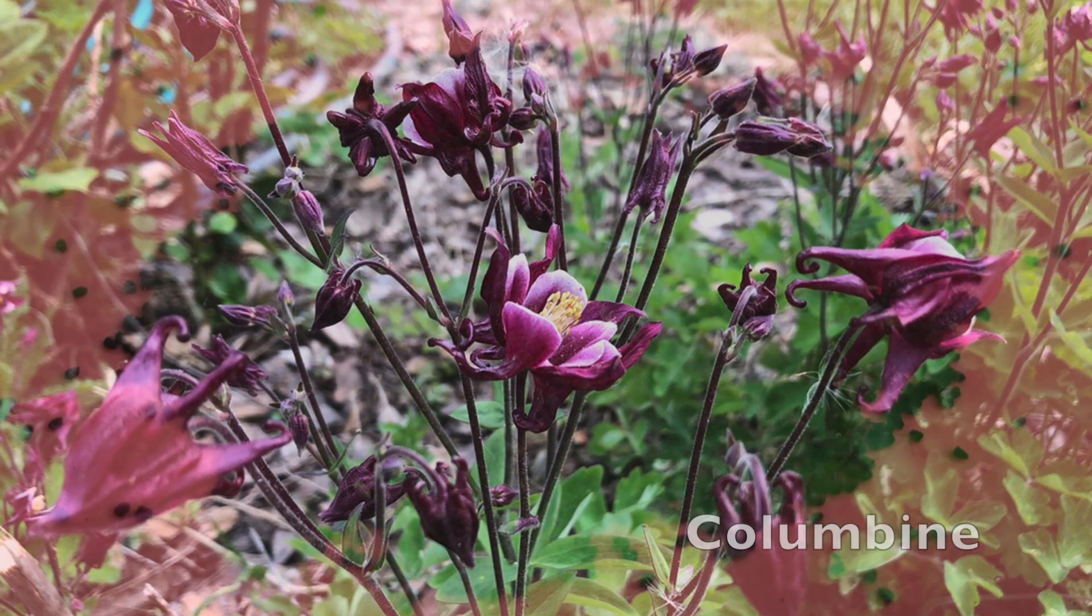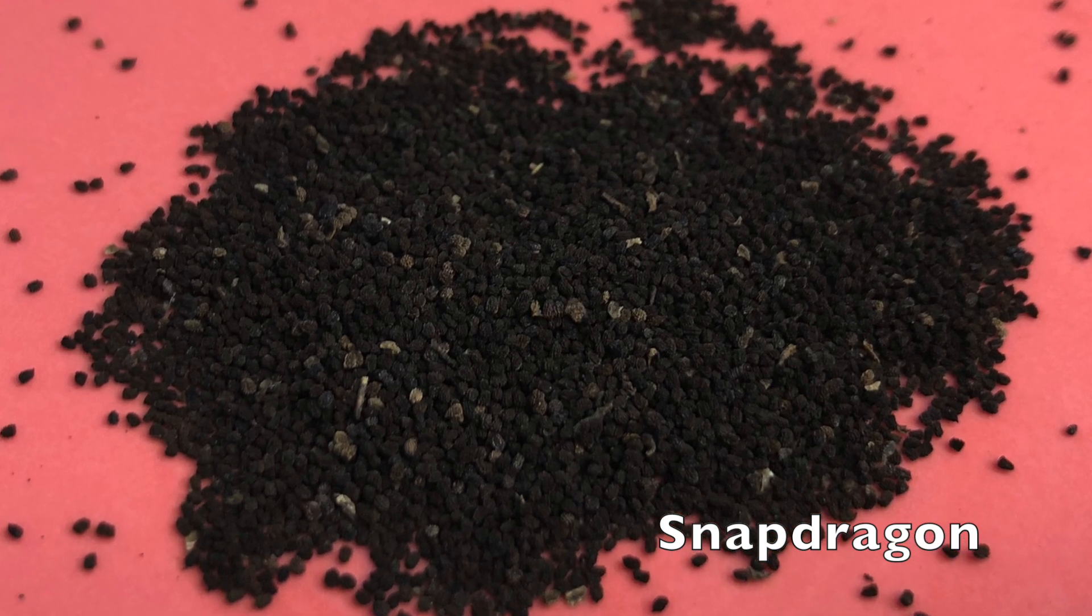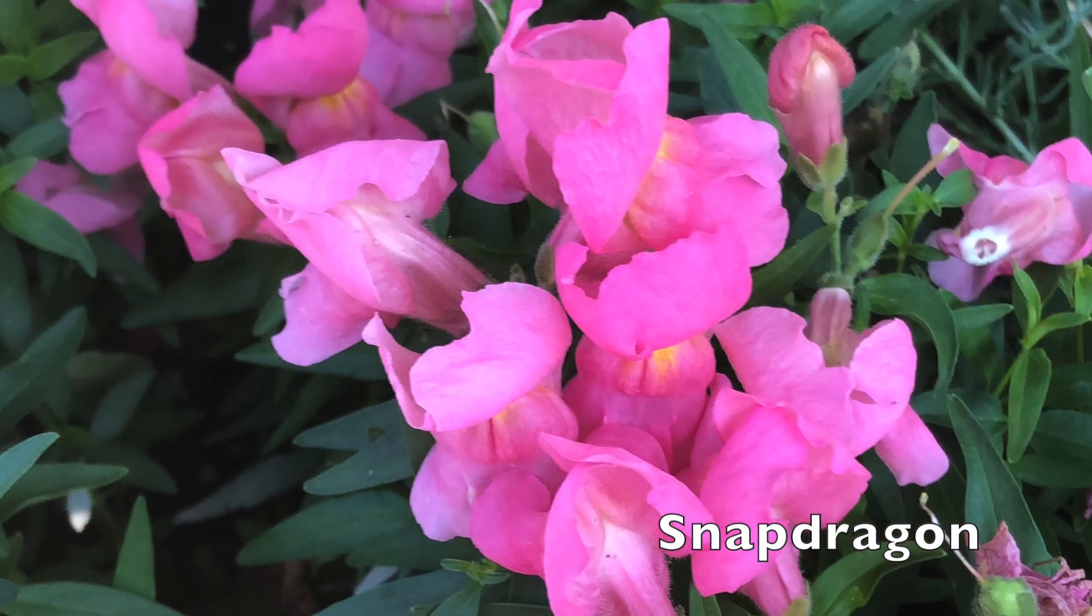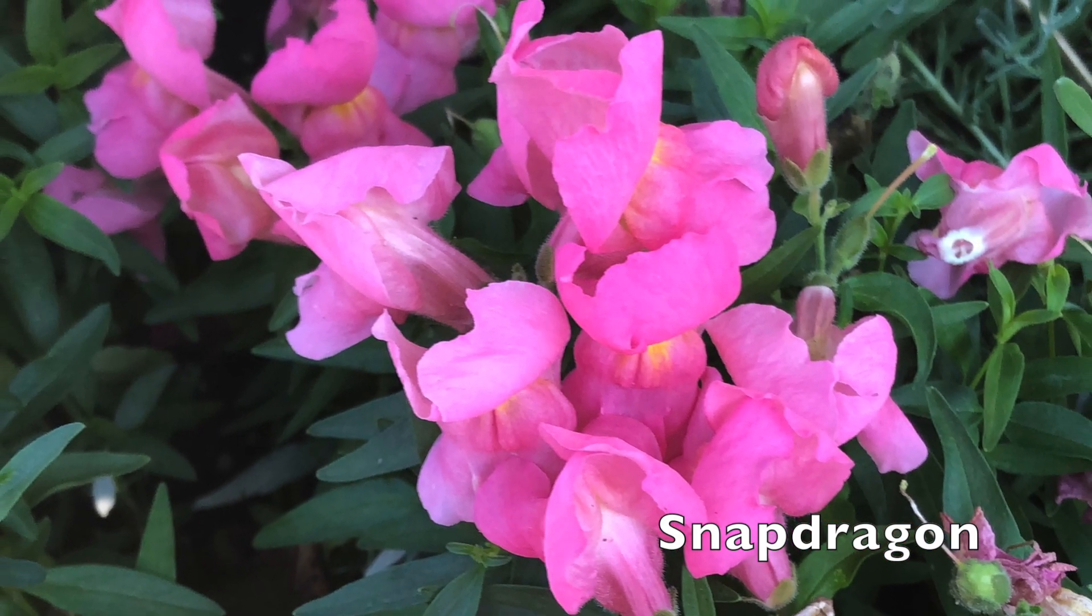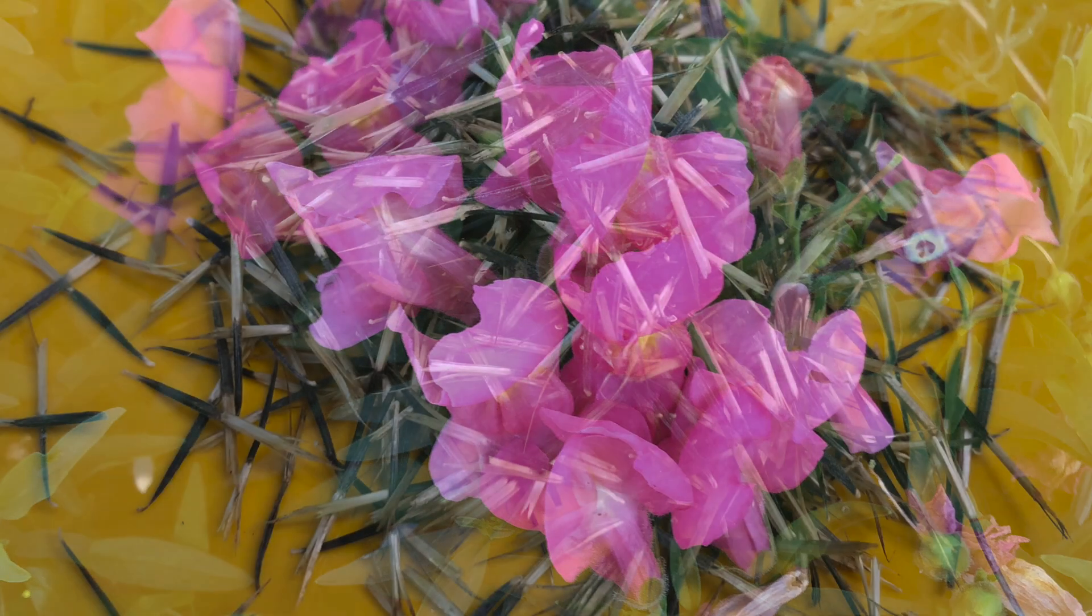For germination testing, you are looking to see if your seeds are still good by checking to see how many in a small group will sprout. You are looking for both the tiny little roots that will go underground and also what will be the stem and the leaves of the plant to emerge from the seed.